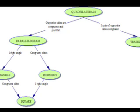Time for geometry! A quadrilateral is a four-sided polygon. Special types of quadrilaterals include parallelograms, rectangles, rhombuses, kites, squares, trapezoids, and isosceles trapezoids.